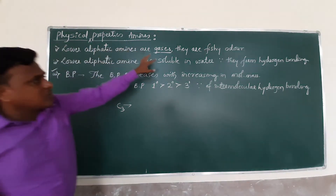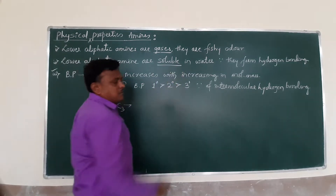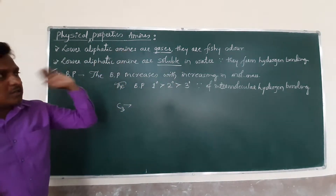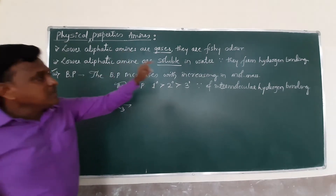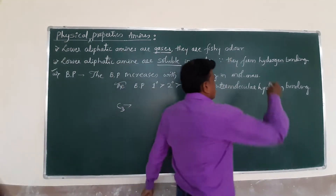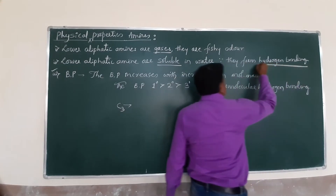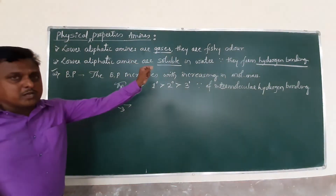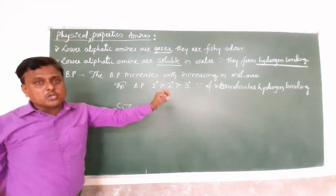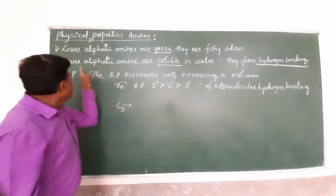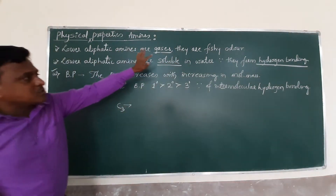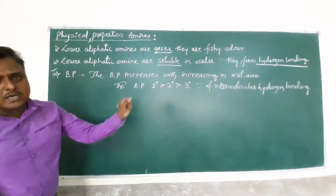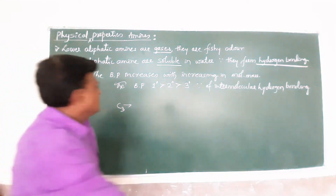The second physical property: lower aliphatic amines are soluble in water. They are soluble because they easily form hydrogen bonding — specifically, intermolecular hydrogen bonding.